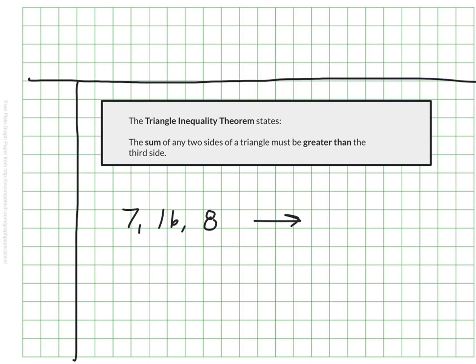So knowing that, do these three sides make a triangle? Think for yourself. 7, 16, and 8. Does that make a triangle? Knowing that two sides must be greater than the third side. And I hope you thought for yourself that the answer there would be no. If I add 7 plus 8, I get 15. And 15 is not greater than 16. So this is not a triangle.